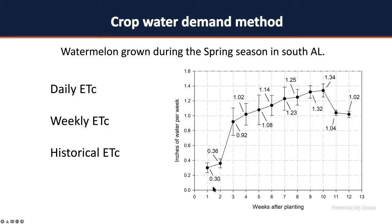In a practical sense: first week, apply about 0.3 inches — transplants are small and don't need much. Then water needs boom as plants grow, since nutrients are uptaken through water. By end of season, the maximum water needed per week is about 1.3 inches. This is the spring pattern, as you go from cold to warm temperatures.